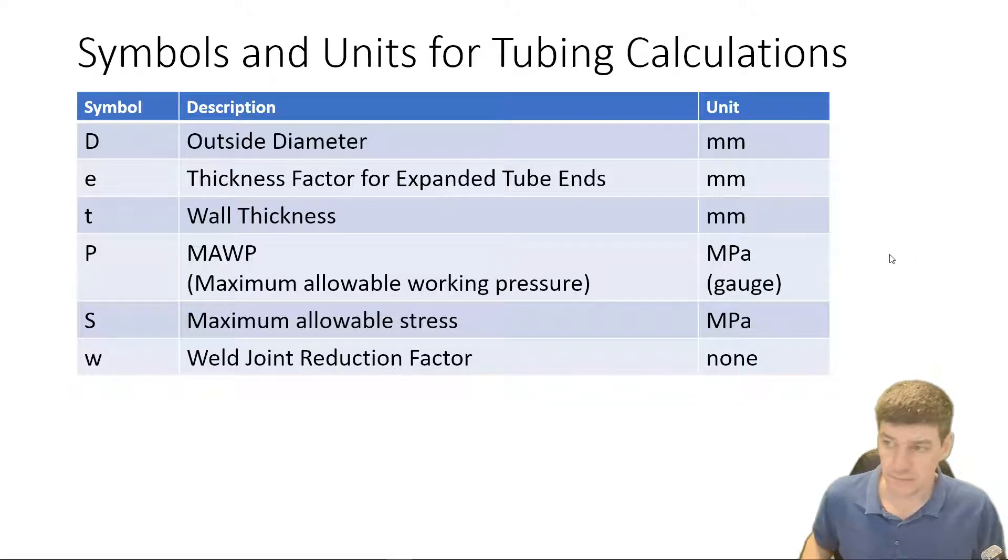Just as a summary for what we're going to need for tubing, we have a number of things. We have outside diameter D, this thickness factor, we'll talk about that, lowercase e, wall thickness T, P, capital P, MAWP, which is our maximum allowable working pressure. S, which is our maximum allowable stress. That's the value we'll get from our section 2 property tables that we looked at in the previous section. And then we have W, weld joint reduction factor.